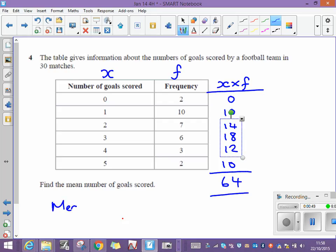So the mean, the mean number of goals scored, is the total number of goals, well that's sixty-four, divided by the number of matches, well they tell you that's thirty. If you don't know that it's thirty, add up the frequency, that will also come to thirty.